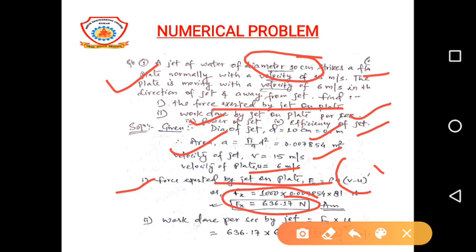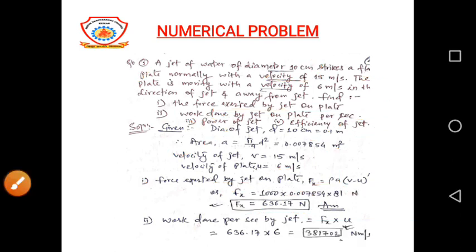Now the second part shows the work done. We have to calculate the work done per second by the jet. That is Fx into U — the force exerted by the jet on the plate multiplied by the velocity of the plate — which gives the value 3817.02 Newton meter per second.